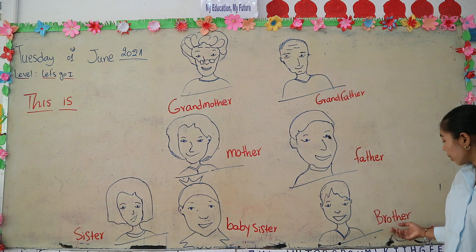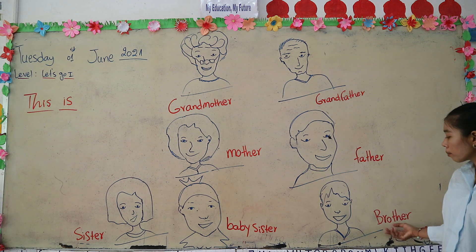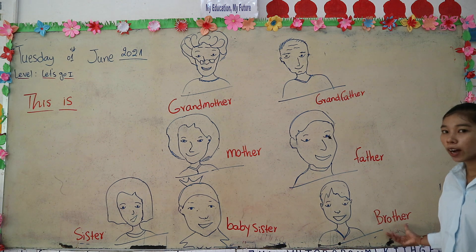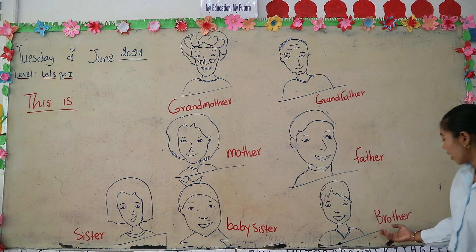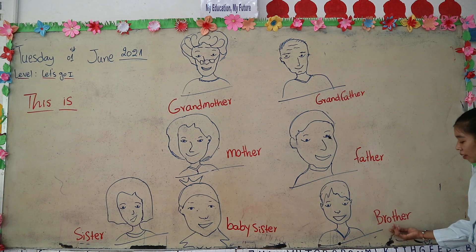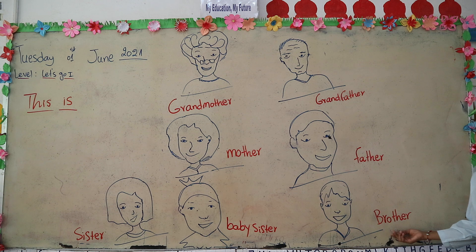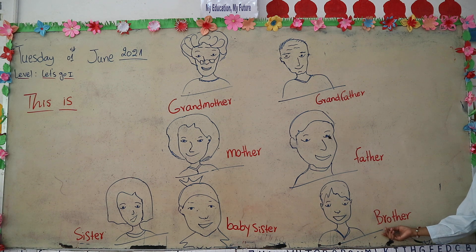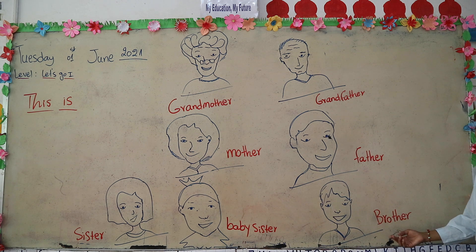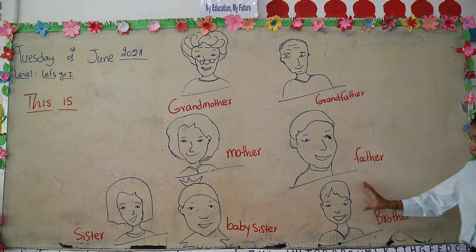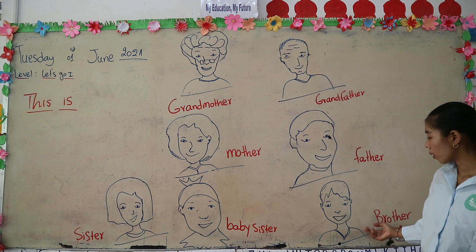Brother is a boy. For me, I don't have a brother because I am a sister. I have only one younger sister. So brother means a male sibling.